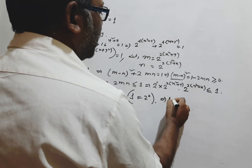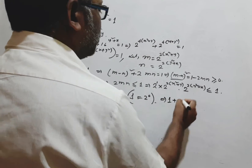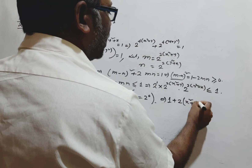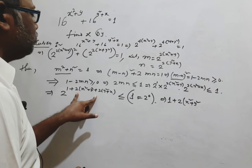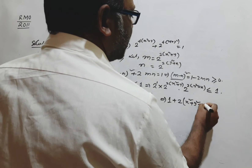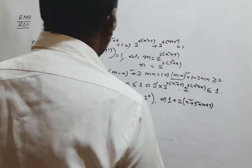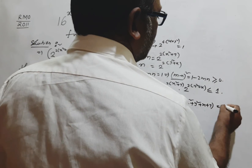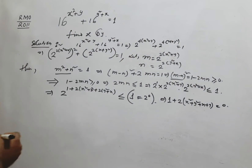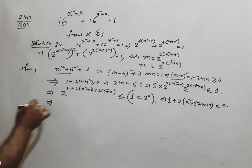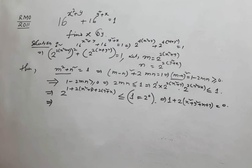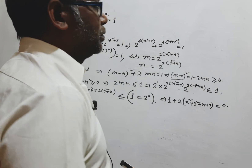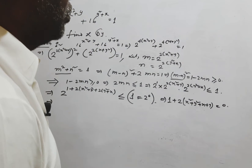So we get: 1 + 2(x² + y² + x + y) = 0. This equality holds only when 2mn = 1 exactly, meaning we must have equality throughout, not just the inequality.